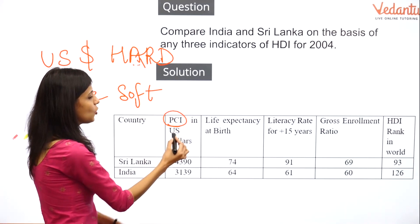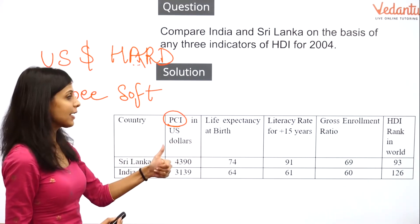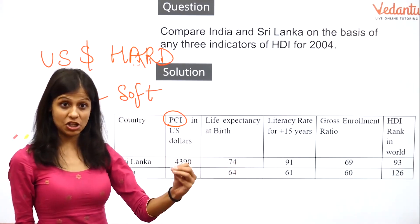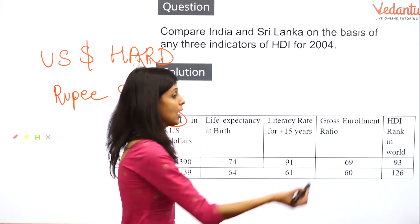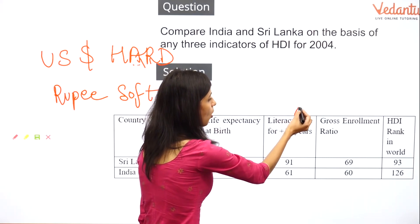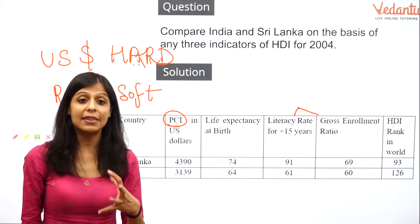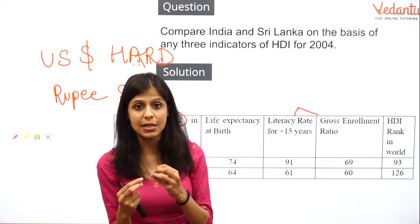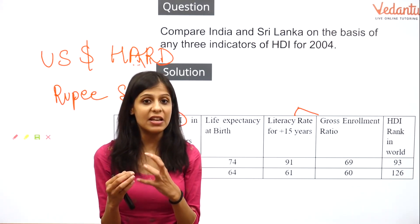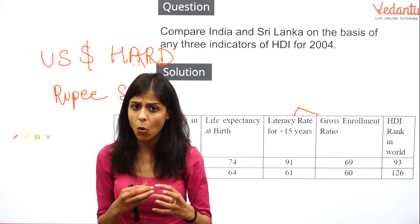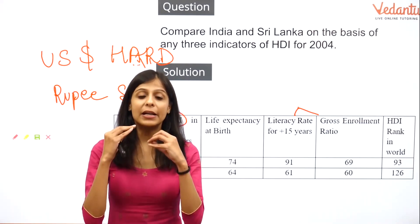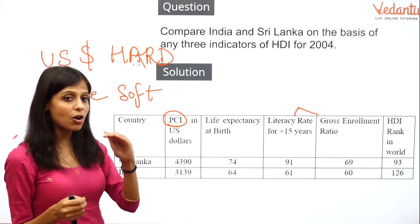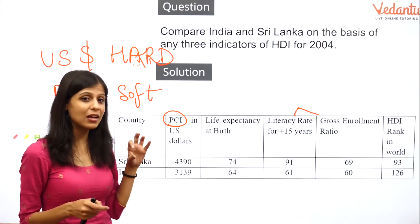The three HDI parameters are: first, per capita income in US dollars; second, life expectancy at birth; and third, literacy rate — which is divided into two dimensions: gross enrollment ratio, and literacy rate for people aged 15 years and above. A person is considered literate from age seven if they can read and write in their own basic language, but HDI measures literacy for age 15 and above.